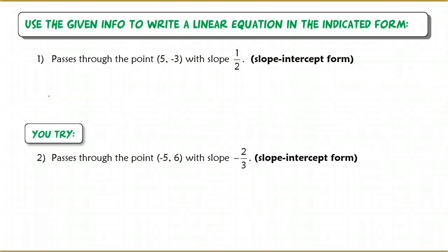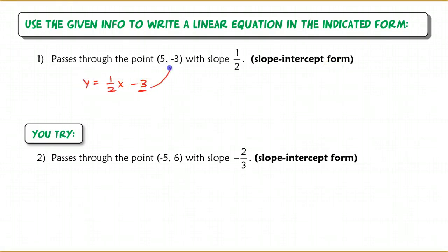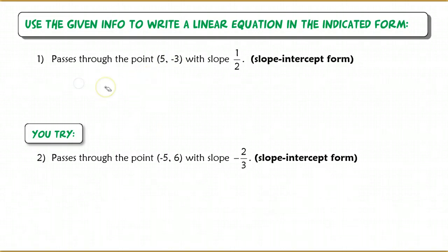The first question says the line passes through the point (5, -3) with a slope of 1/2, and we want to write the answer in slope-intercept form. I don't want to just say y = 1/2 x - 3, which is what a lot of people do — they look at the -3 and plug it in. But this is not the y-intercept, so I can't make that -3 equal the y-intercept. The fastest method is to put this into point-slope form first.